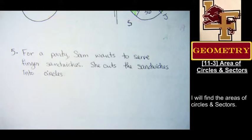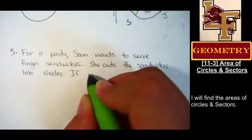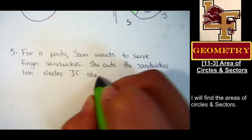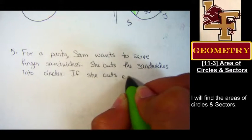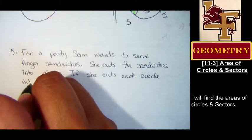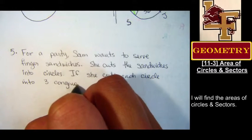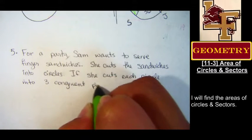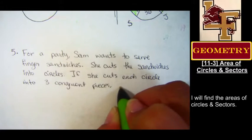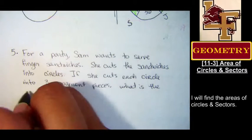That or she bought a bunch of uncrustables. You know, they're circles already? So she made her own uncrustables. If she then cuts each of these circles into three congruent pieces, what is the area of each piece?